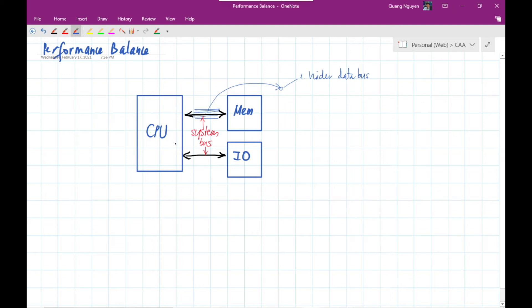For a 16-bit system, we use 16 lines. For a 32-bit system, we use 32 lines. And for a 64-bit system, we use 64 lines. So this will make a wider data bus.